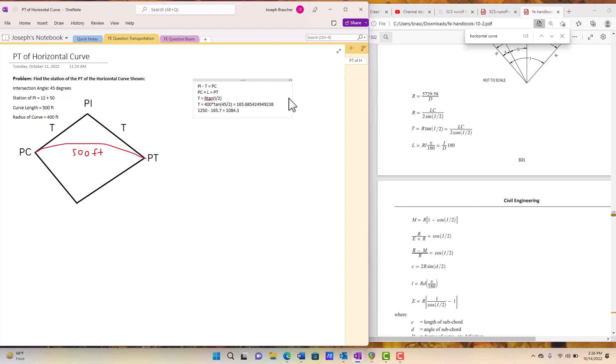And then the final part of the answer here is to take that PC that we've calculated, add the curve length here of 500 feet, and our final answer will be 1,584.3 feet.